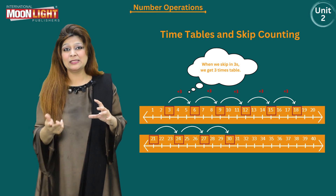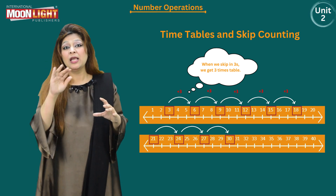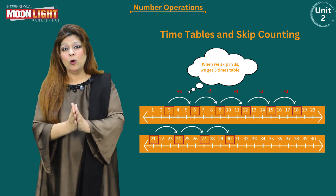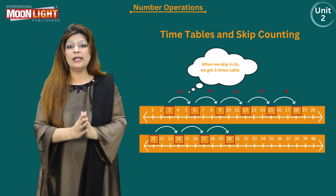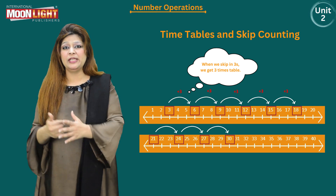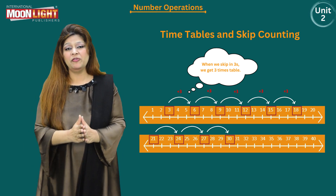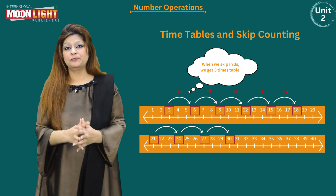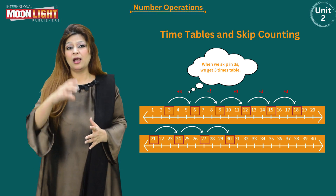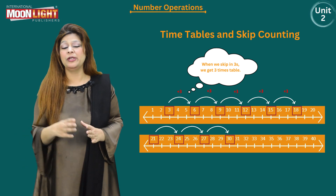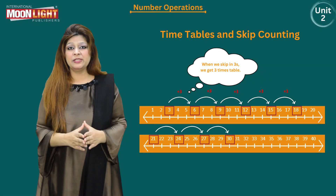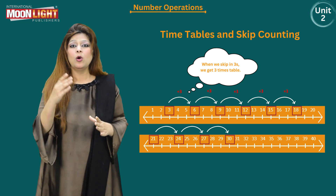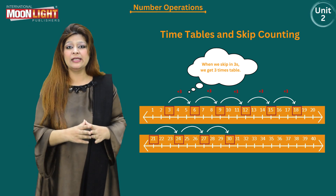We are skipping two numbers each time to reach the next number. The eighth jump gives 24, the ninth jump gives 27, and the tenth jump gives 30. This is skip counting in threes, and this is how we develop the multiplication table up to the number 10.